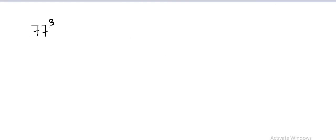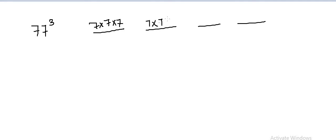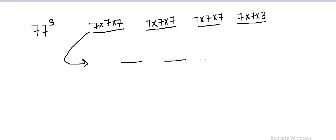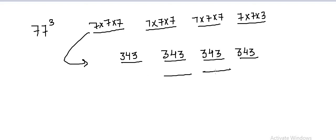Now let us calculate the cube of 77. Again, we have to make 4 boxes. In all the 4 boxes, I will take 7 × 7 × 7, and the number remains the same in each box. 7 × 7 × 7 equals 343. So we write 343 four times, and then the middle 2 boxes are multiplied by 2, giving us 686 here and 686 here.